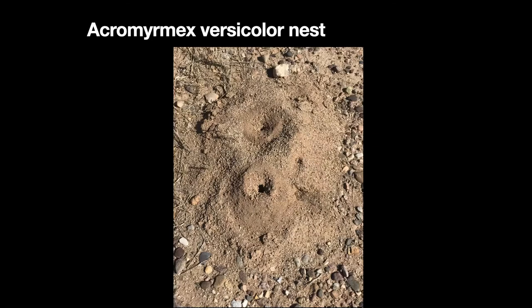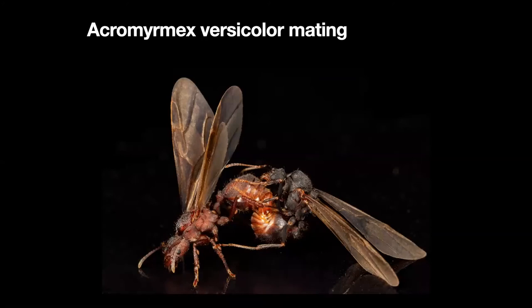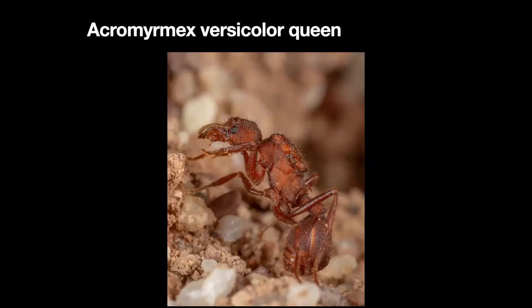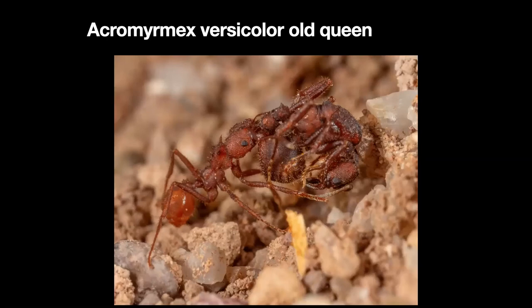Here's the nest of Acromyrmex versicolor — very common in the San Pedro. Sometimes you'll see several nest openings maybe three or four feet apart that go to the same underground nest. Here's a mating pair. I was camped out in the desert over by Green Valley once, and early in the morning there were just clouds of these flying. Here is the queen of Acromyrmex versicolor. Interestingly, this species often founds a new colony with two, three or more queens, but then according to the literature the workers will kill all the queens except one. Here you see one just taking an old queen out to the dump.